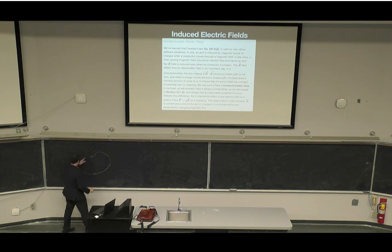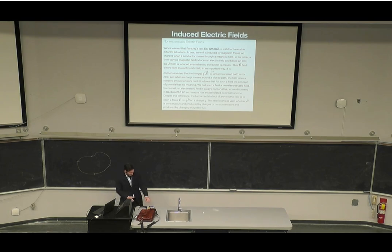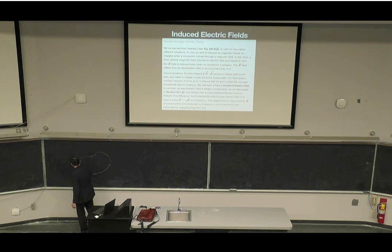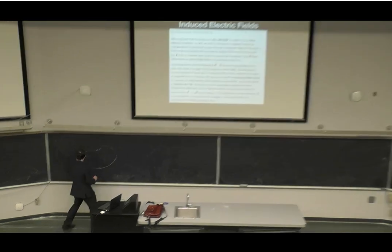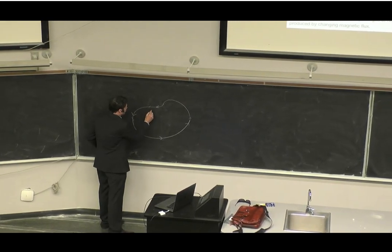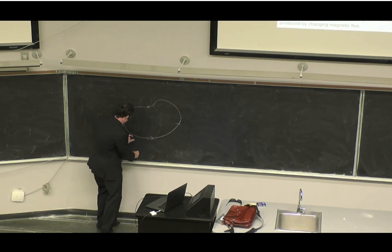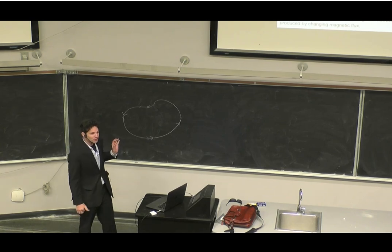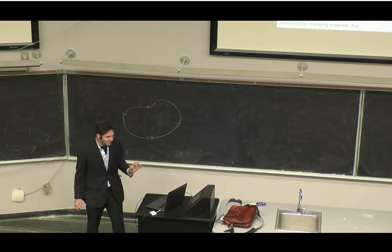For a conservative field, if I take a line integral — the value of the function along a path — the parts going one way and the parts going the other way cancel out. All those little differential bits sum to zero for a conservative vector field.